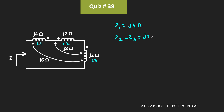Now, if you observe, coil number 1 and coil number 3 are mutually coupled. Let's say their mutual inductance is M13, so M13 will be equal to M31. Similarly, coil number 2 and coil number 3 are also mutually coupled, and their mutual inductance is M23, which means M23 will be equal to M32.